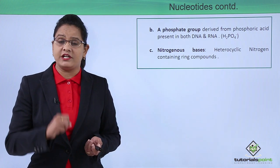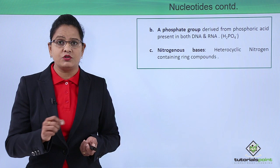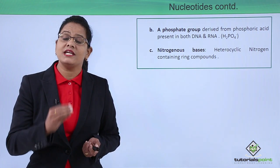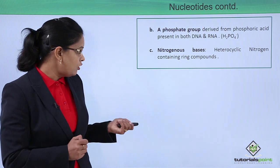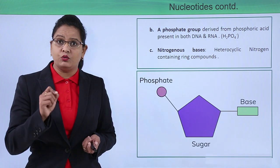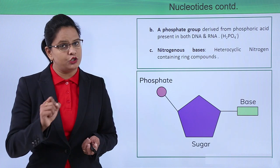The third component is the nitrogenous base. We will learn about this component specifically in the next videos because it is the nitrogenous base which makes difference in the codes of the genetic information.